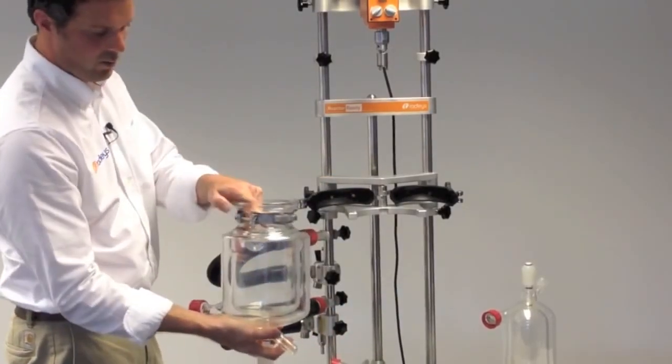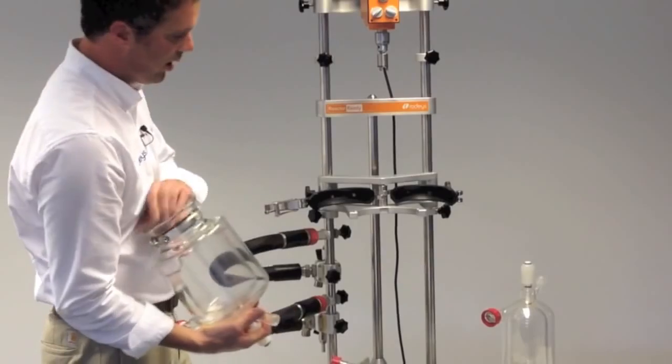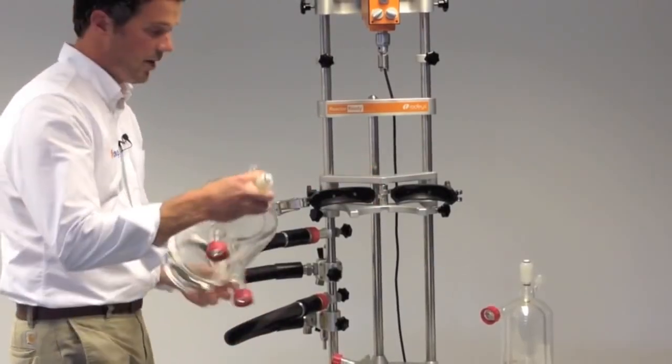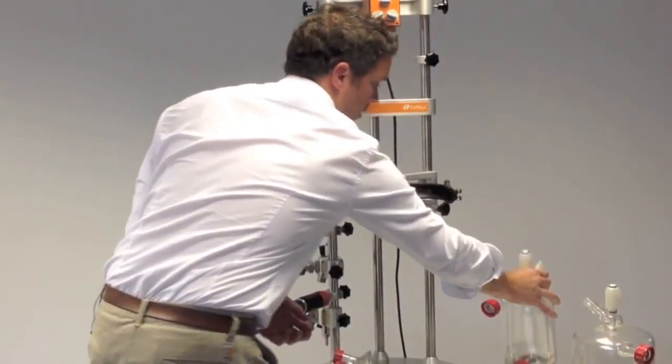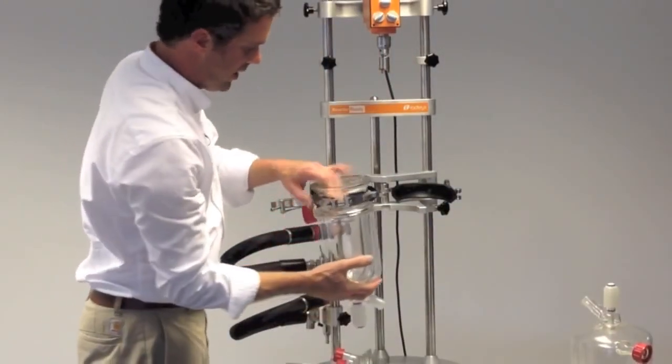The vessel's just hung with a stainless steel support collar that sits in the lugs on the Reactor Ready framework. I'll just drop in the 1 liter vessel.